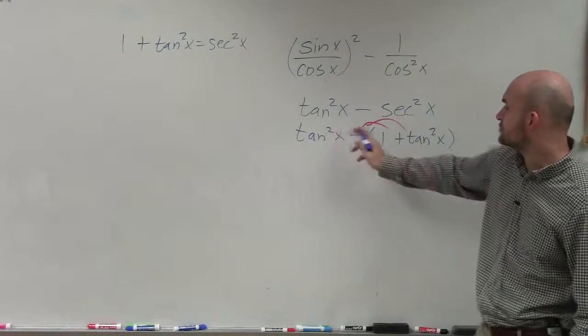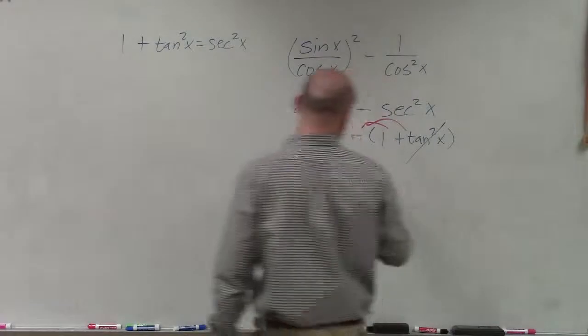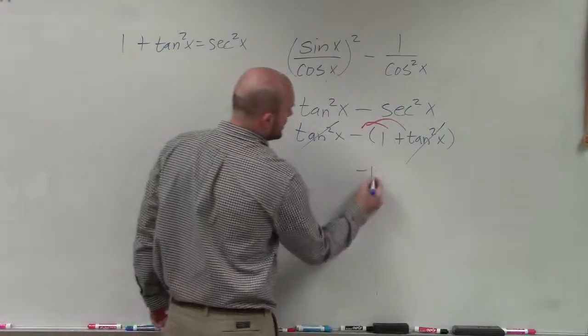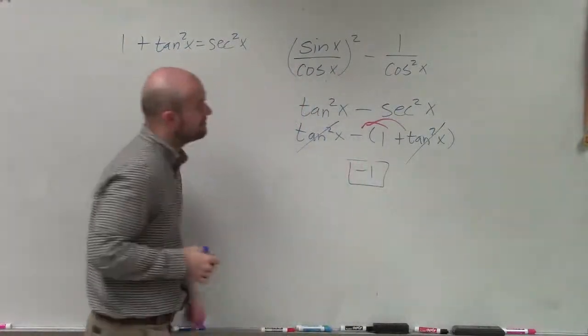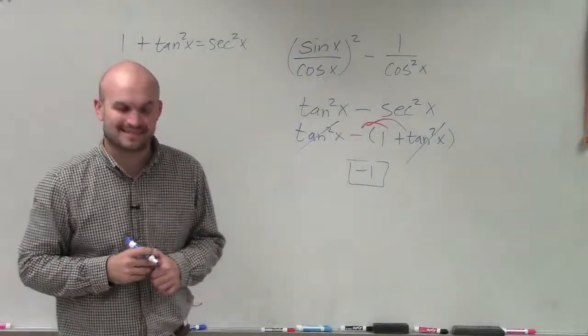And you can see now this is going to be tangent squared of x minus 1 minus tangent squared. So my tangents are going to subtract to 0, and I'm just left with a negative 1. So there you go, ladies and gentlemen. That is how you simplify this trigonometric identity. Thanks.